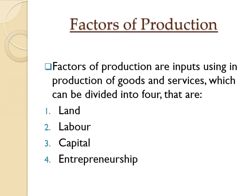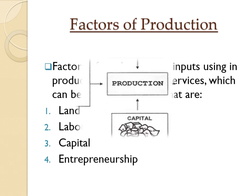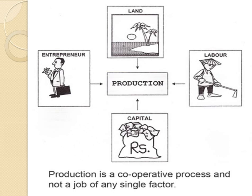Factors of production are inputs used in the production of goods and services, which can be broadly classified under four heads: land, labor, capital, and entrepreneurship. Every unit of a product is produced through the joint efforts of all these four factors of production — land, labor, capital, and entrepreneurship.